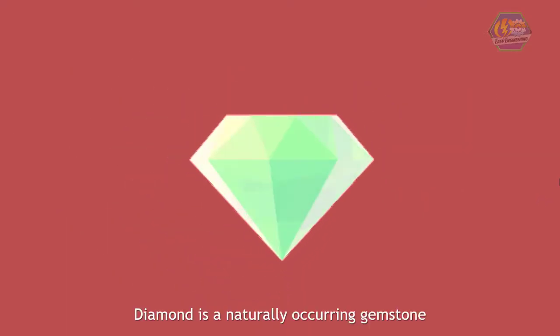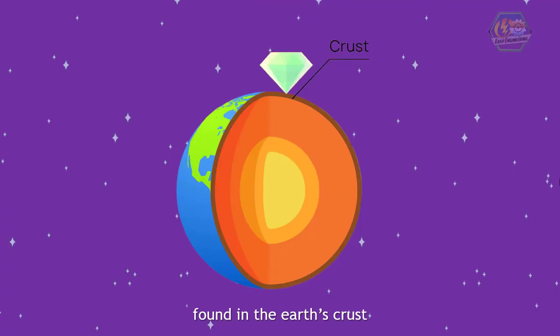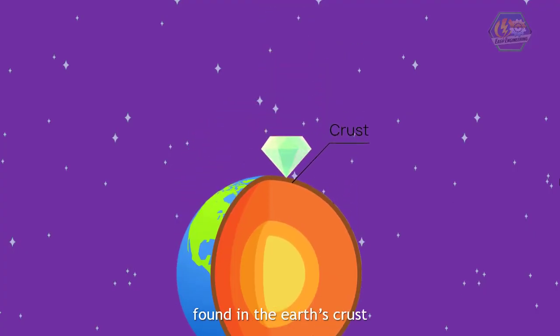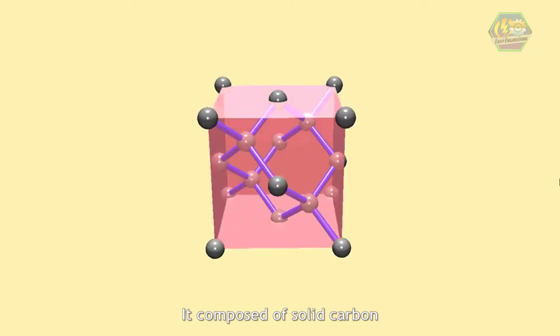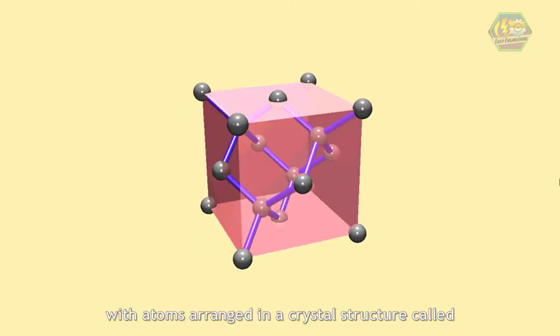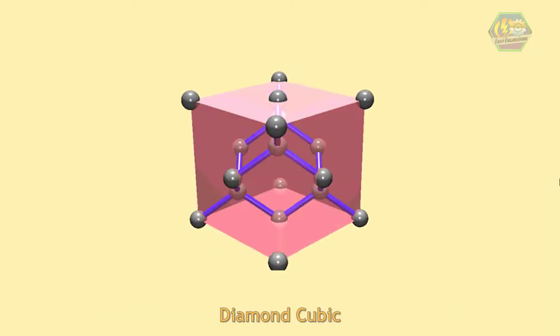Diamond is a naturally occurring gemstone found in the Earth's crust. It is composed of solid carbon with atoms arranged in a crystal structure called diamond cubic.